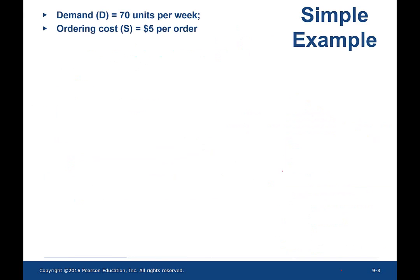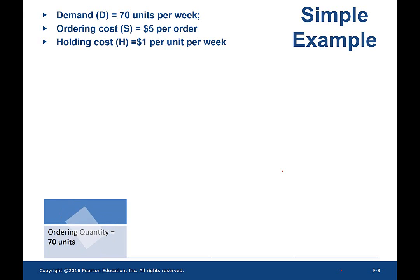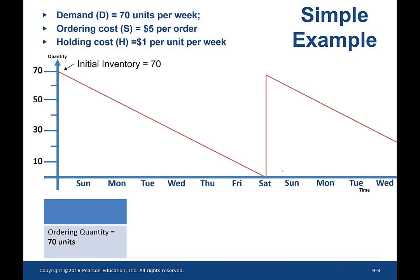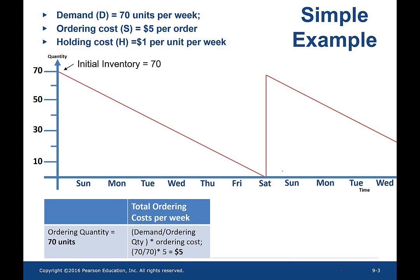Let's take a look at a simple example and build our intuition. The buyer faces a demand of 70 units per week, incurs $5 per order as an ordering cost, and $1 per unit per week as a holding cost. Let's say the buyer orders 70 units. On the x-axis you have time and on the y-axis you have quantity. The buyer starts with an initial inventory of 70 units, and as the week progresses the inventory decreases. By the end of Saturday, inventory hits zero and the buyer places an order of 70 and receives it immediately, then moves on to the next week.